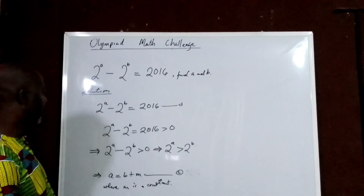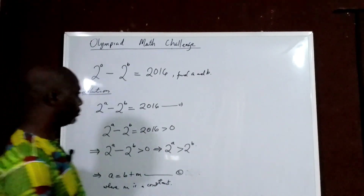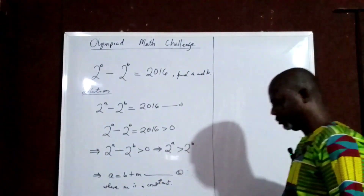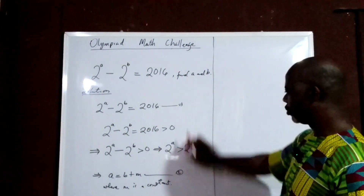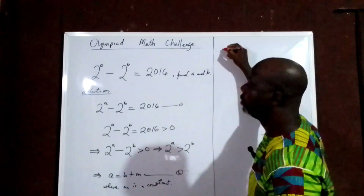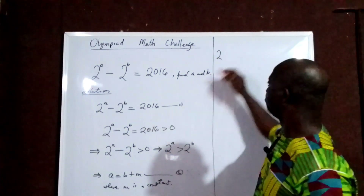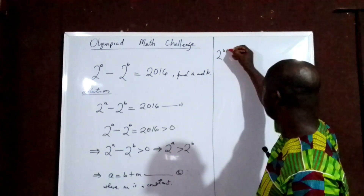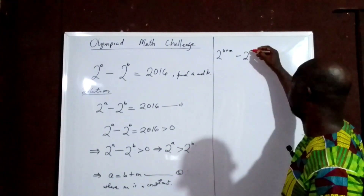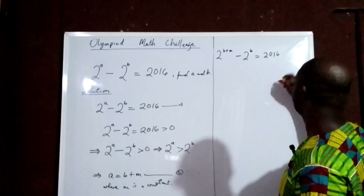So what that means is that our Equation 1 will become: we are going to rewrite it as 2 raised to the power of B plus M, minus 2 raised to the power of B, equals 2016. Where A equals B plus M is Equation 2.